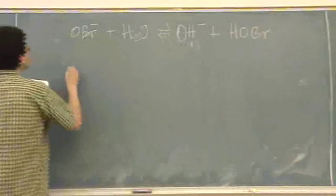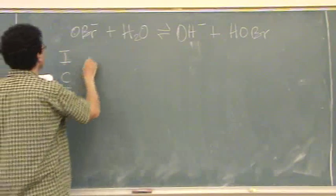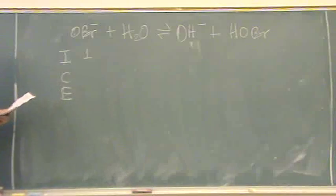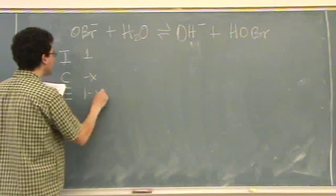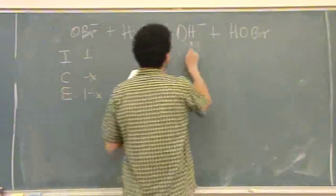You set up the ICE table: I, C, and E. This is 1, that's given in the problem. It's 1 molar. Minus X and 1 minus X. Ignore water. 0, 0.